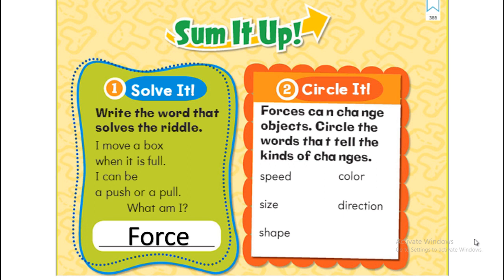Circle the words that tell us the kinds of change. When I have a force and I am moving an object, what can I change? Its color with my force? No. The speed? Yes — I can make it go faster, so speed is one answer. I can also change the direction. If the ball is coming towards me and I push it away, I change its direction.